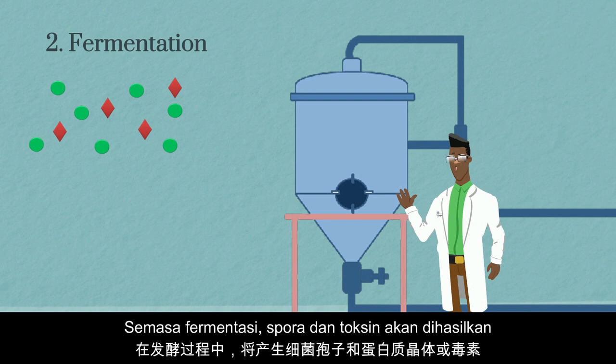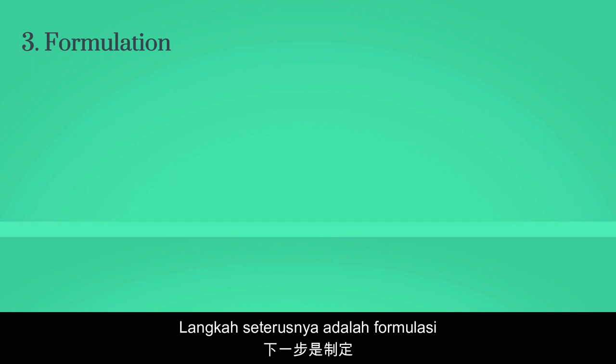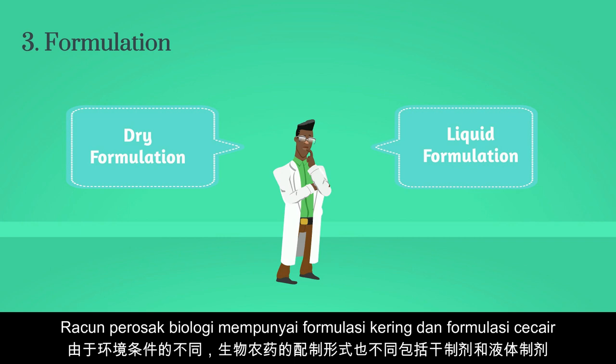These can cause insect death within 48 hours due to blood poisoning as spores proliferate in its blood. The next step is formulation. Due to differences in environmental conditions, biopesticides are formulated in different forms, including dry formulation and liquid formulation.